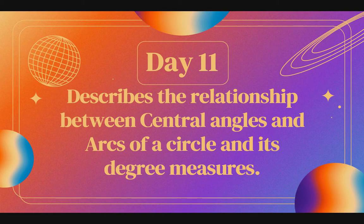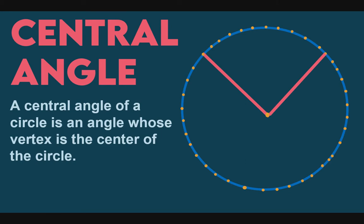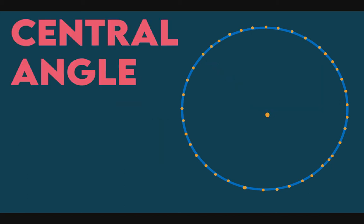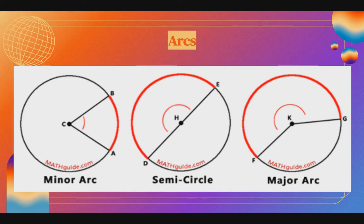Now let us proceed to day 11 objective, which is to describe the relationship between central angles and arcs of a circle and its degree measures. Central angle — let us review our definition. A central angle of a circle is an angle whose vertex is on the center of the circle. So the vertex, or the point where it meets, must be at the center.